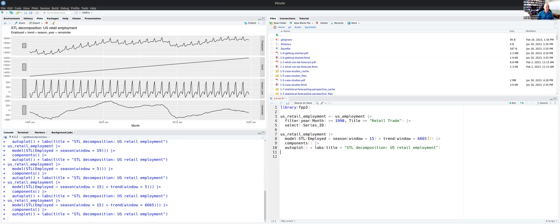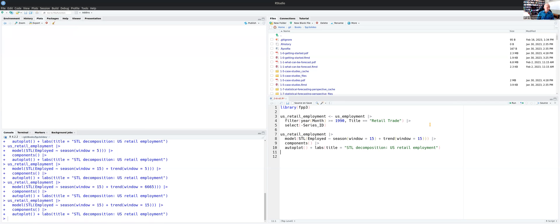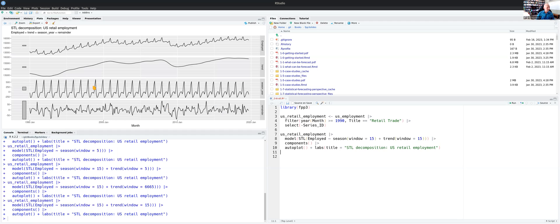So you see a lot of structure in the remainder, which you don't normally want to do. So having a more moderate trend window hopefully will give us something that's sort of smooth in the trend and capturing most of the interesting variation and all of the uninteresting noise ends up in the remainder, but there's no strong structure in the remainder.